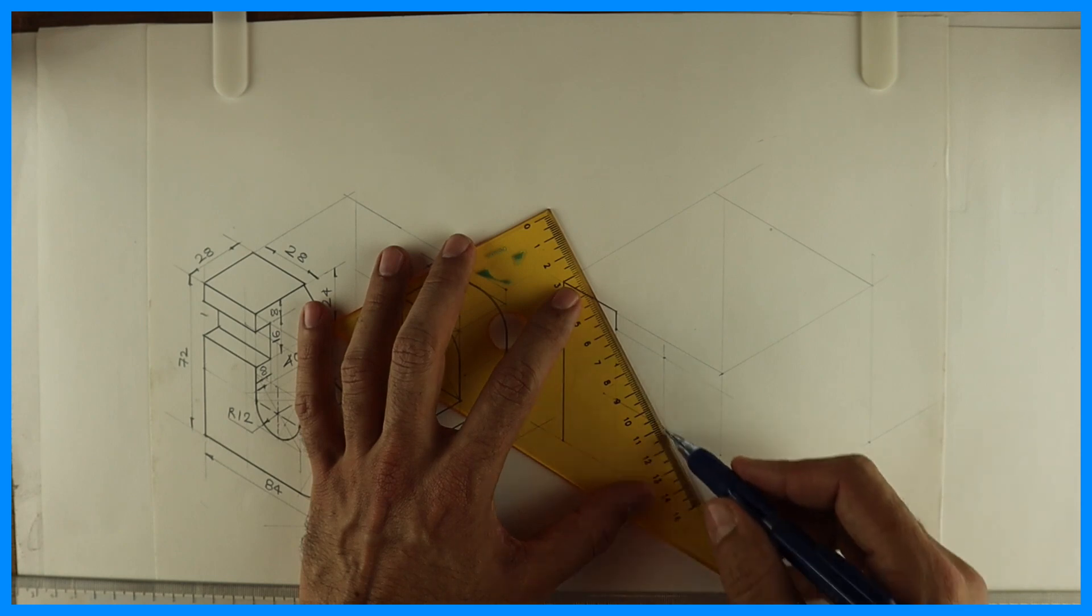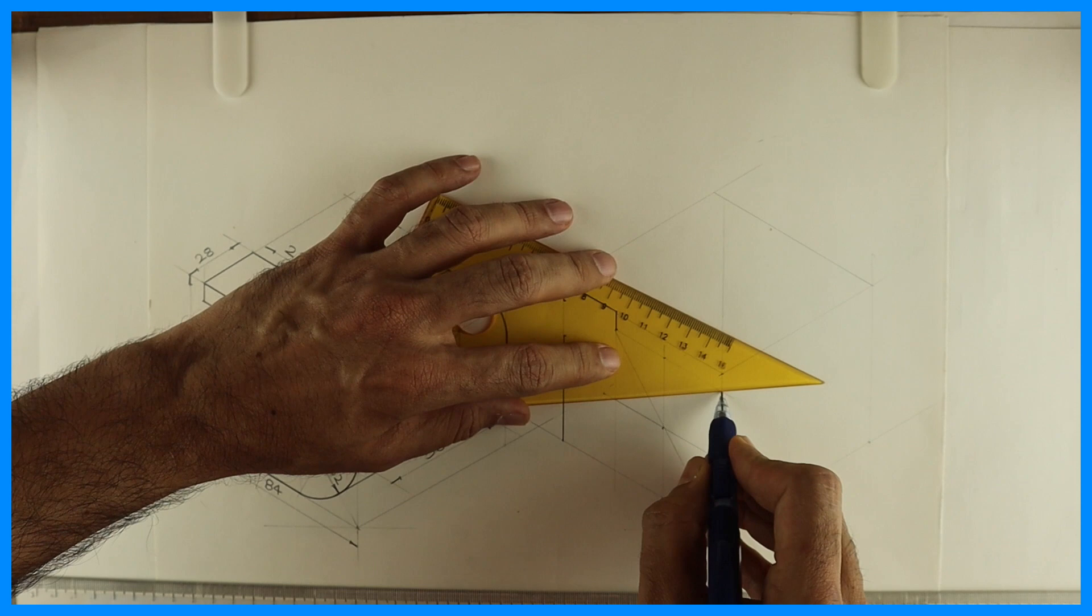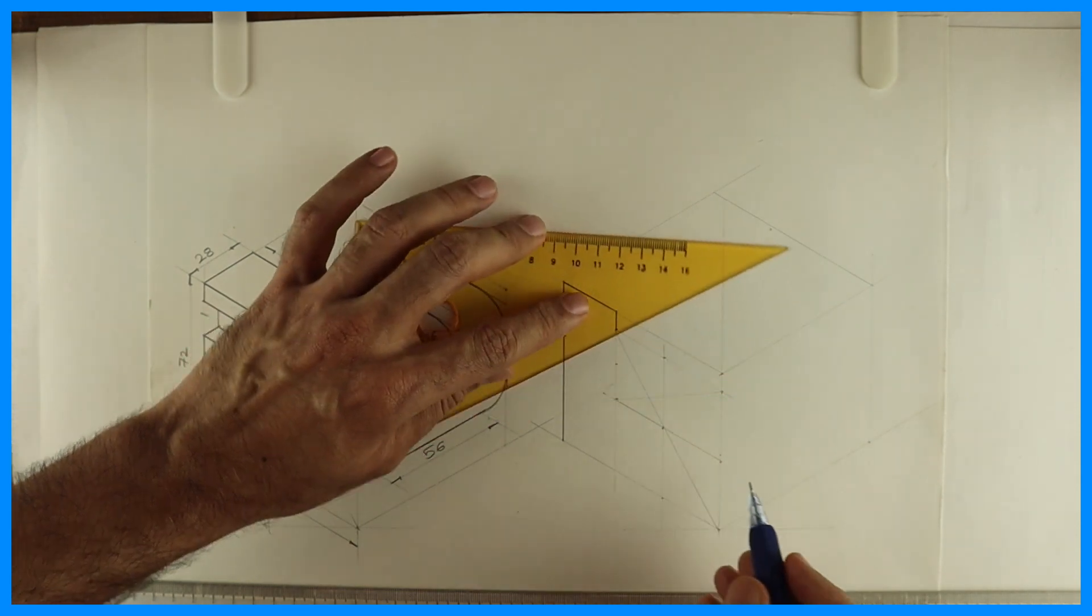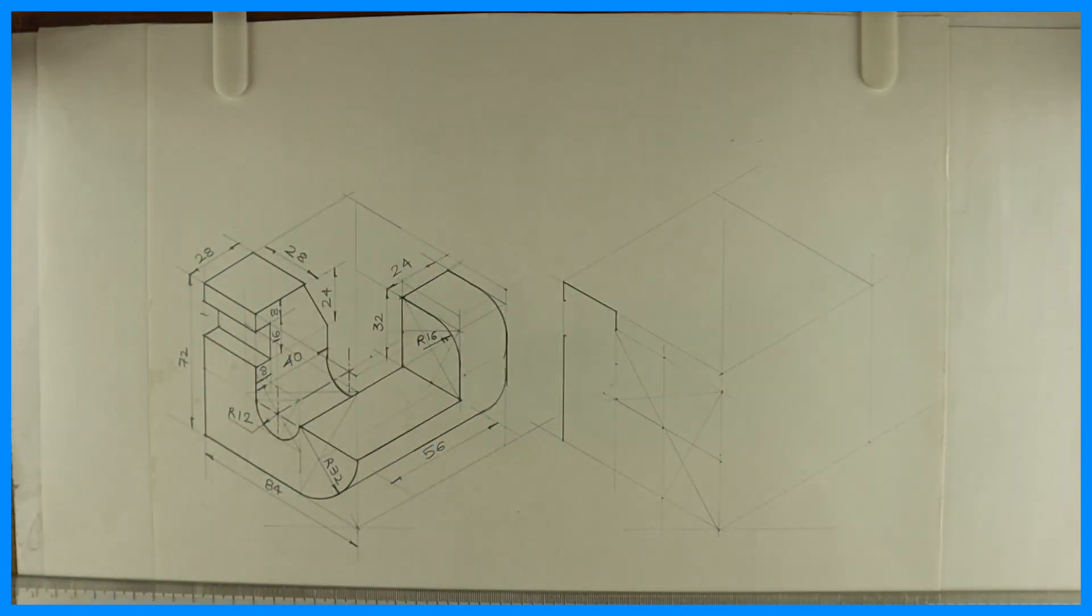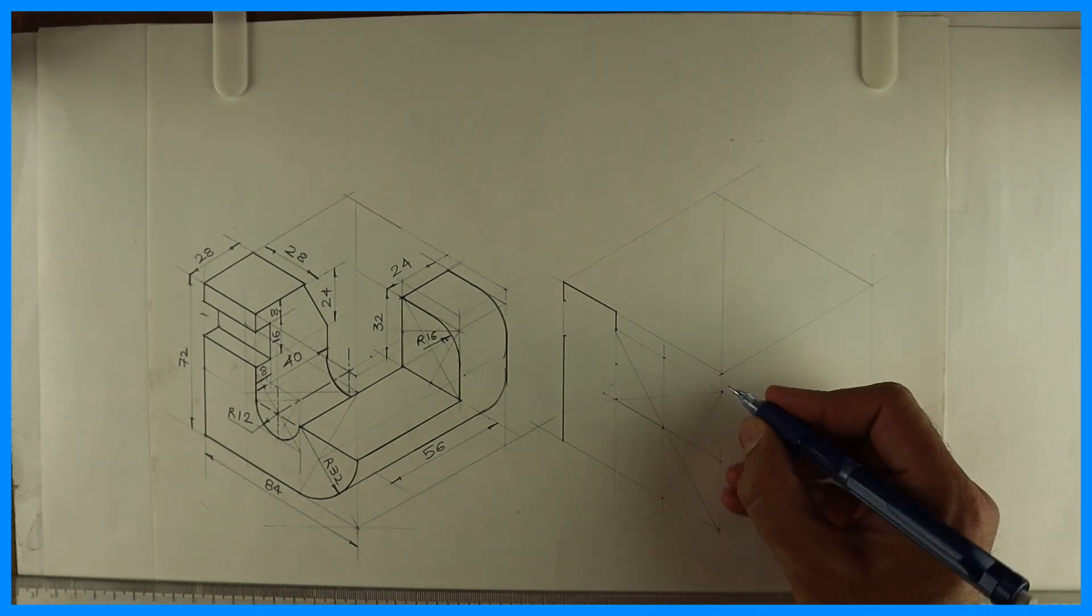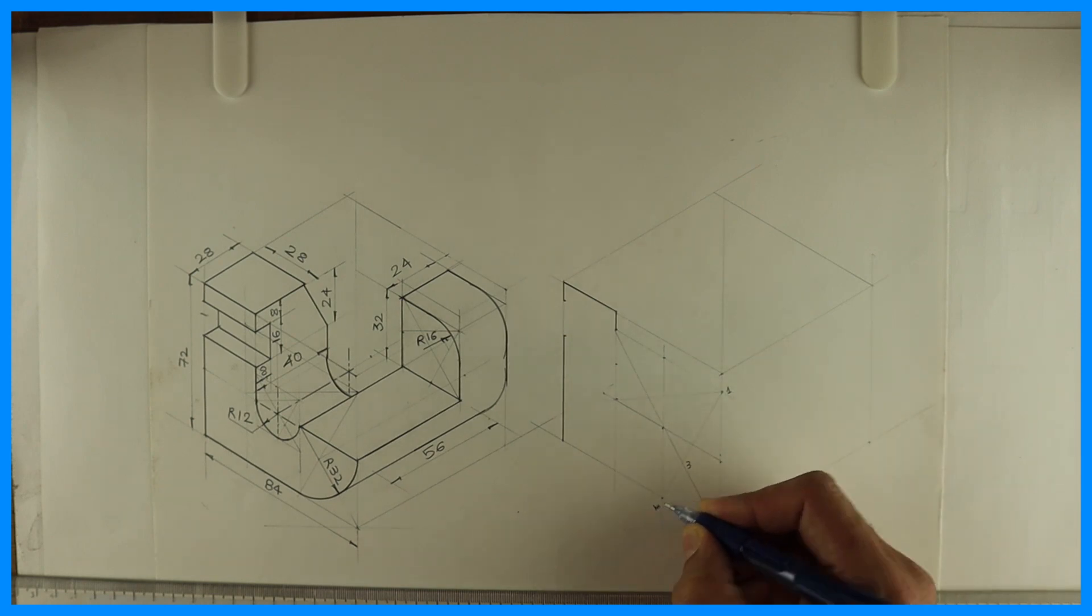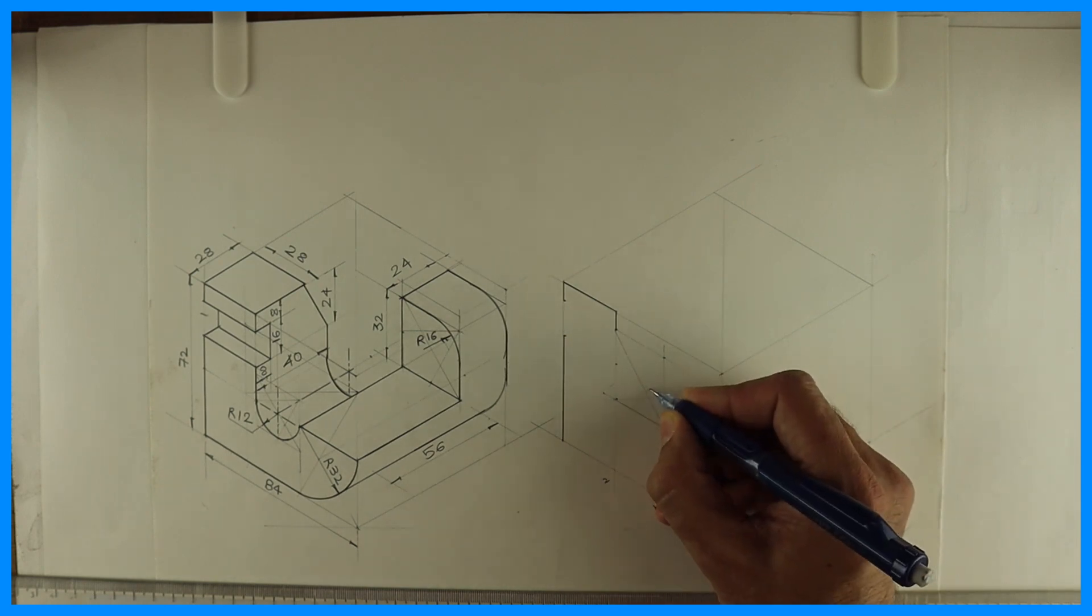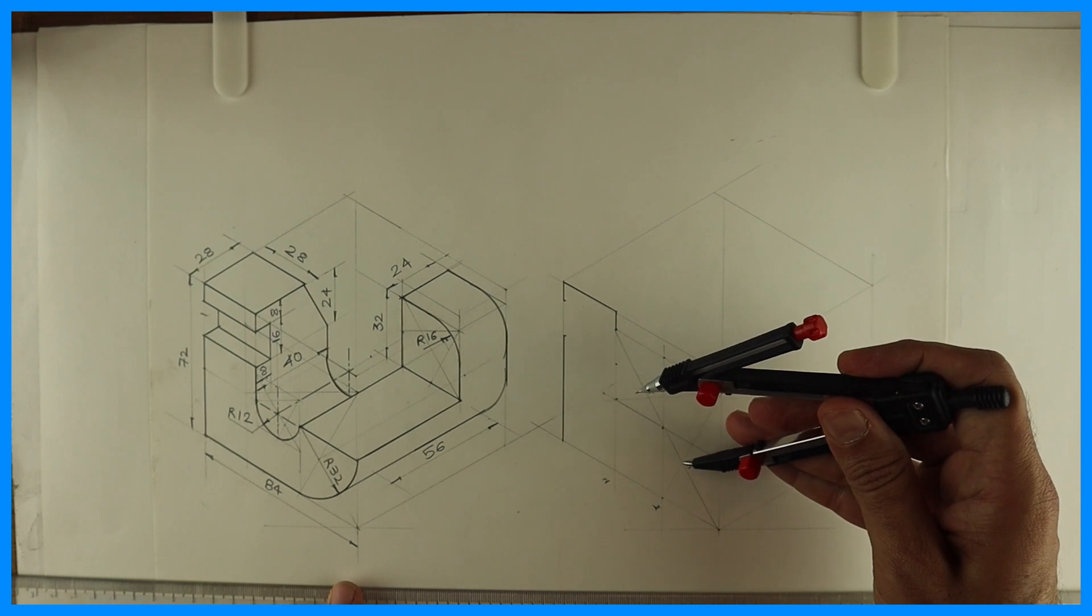You draw longest diagonal, then from this corner you join opposite midpoint. You can name them as 1, 3, this is M, this is 2, this is 4. So I can take 32M and draw arc.